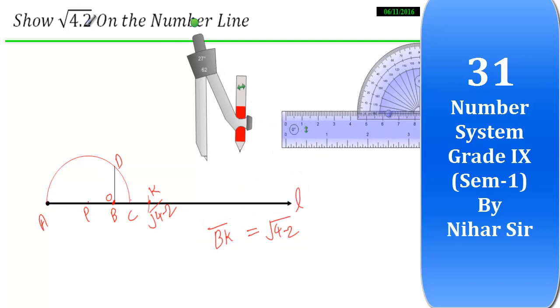This is how you can show 4.2, 3.5, same method. You need to mark this point one centimeter away from this, and draw this, and all the method is same.